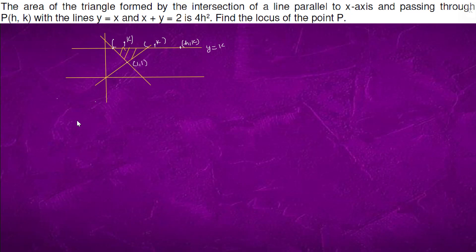Now area of the triangle is half times height. The height is k minus 1. We don't know the base yet, this base.